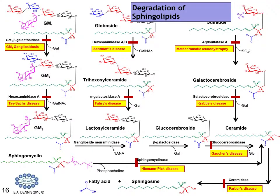This slide depicts the major lipid storage diseases known. They all involve the degradation of complex sphingolipids, as illustrated, and the specific enzyme defect is shown. Many of these have acquired specific names, particularly by the discoverers of these diseases, such as Sandhoff and Fabry's disease, as illustrated here. A large number of steps in sphingolipid degradation are shown, including, at the very end, the breakdown of cerebrosides and ceramides themselves, which can cause accumulation of products.